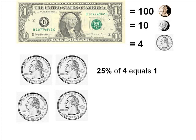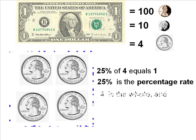So 25% of four equals one. 25% is called the percentage rate, four is the whole, and one is the part.